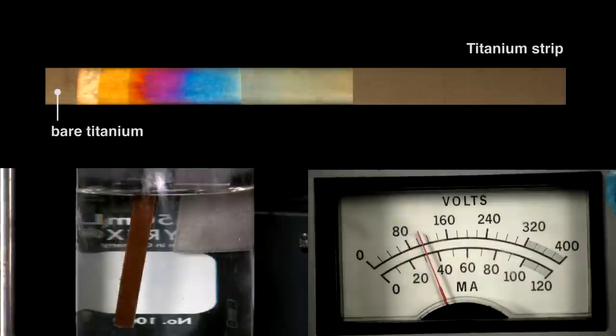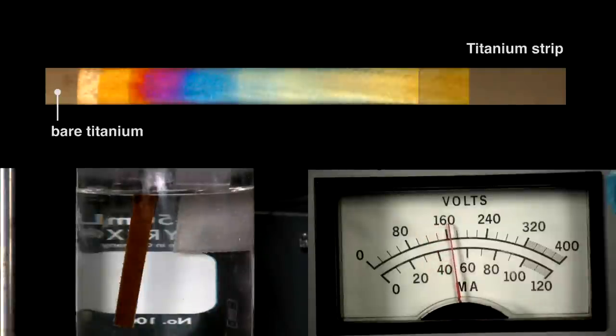Here's what's happening. I'm growing a layer of titanium dioxide. There's a very thin layer there naturally, but as I increase its thickness, you can see the color changes as well.